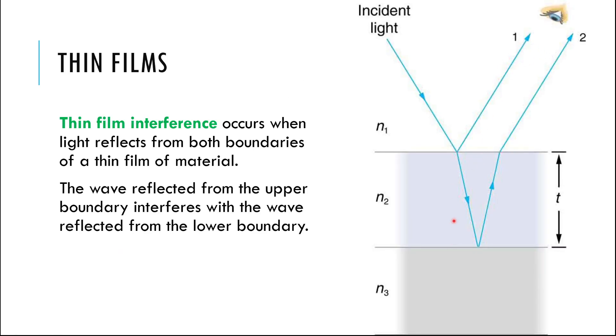The wave reflecting from the upper boundary will interfere with the wave reflected from the lower boundary. These two waves can interfere with each other based on their path difference. We can figure out the path difference by knowing the thickness of the film — we can determine how much further the second wave travels compared to the first.